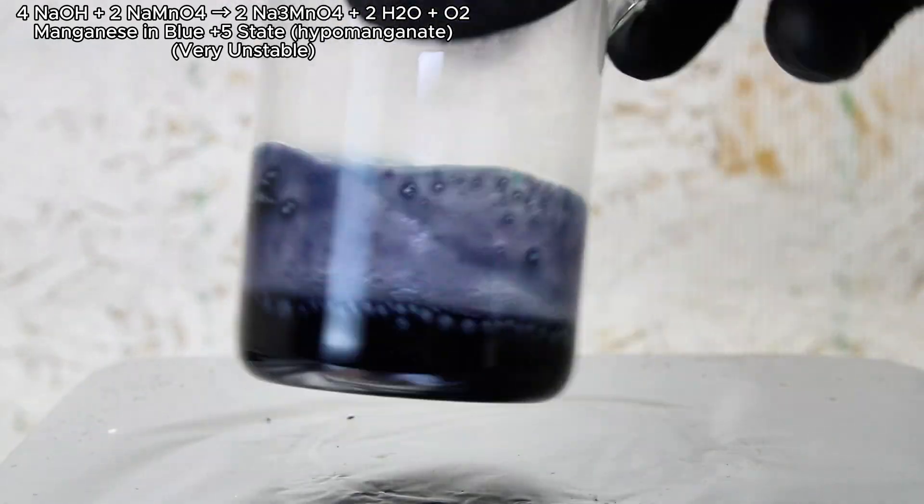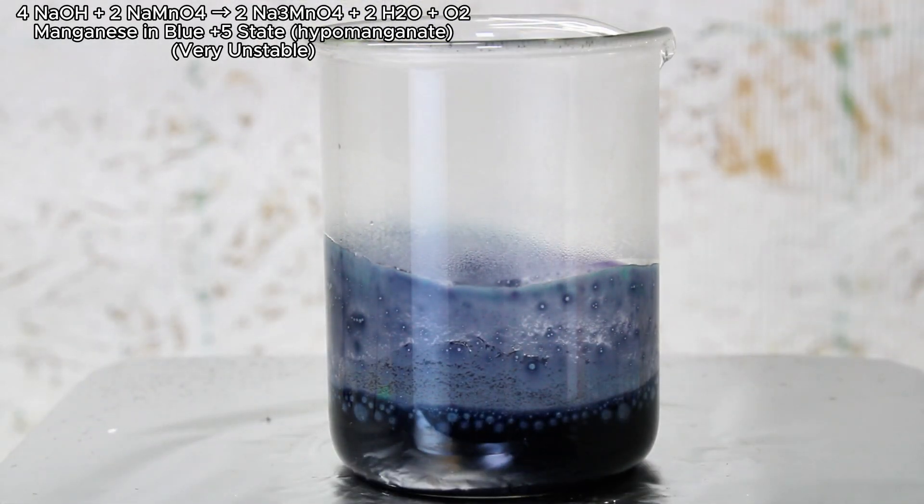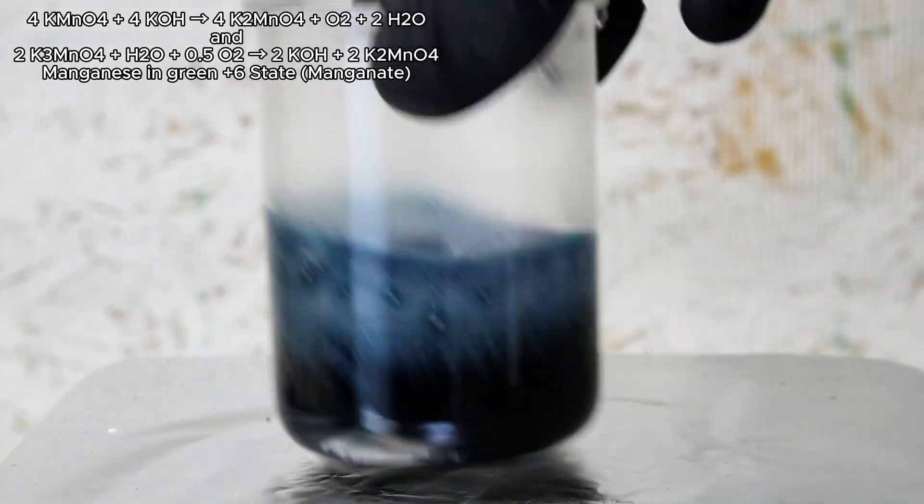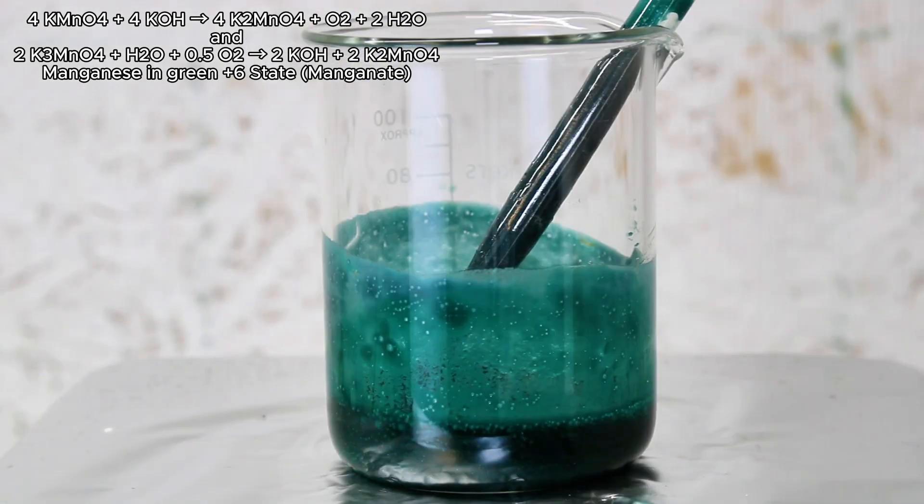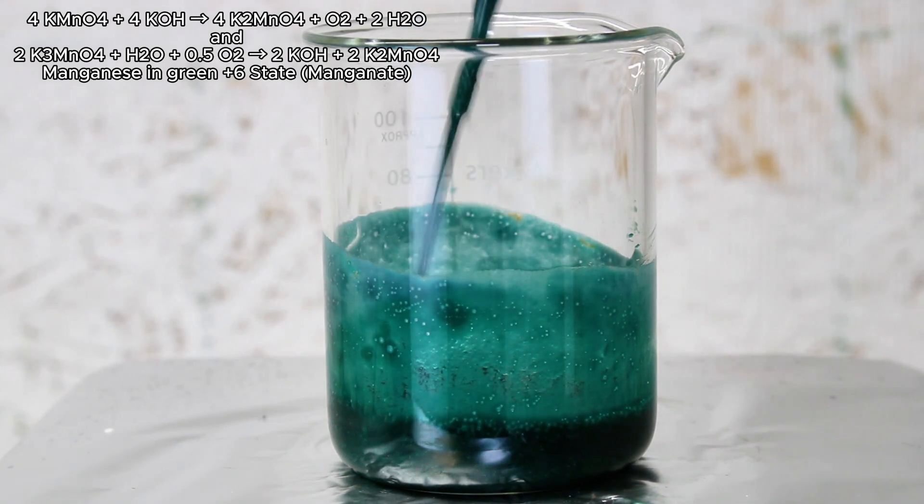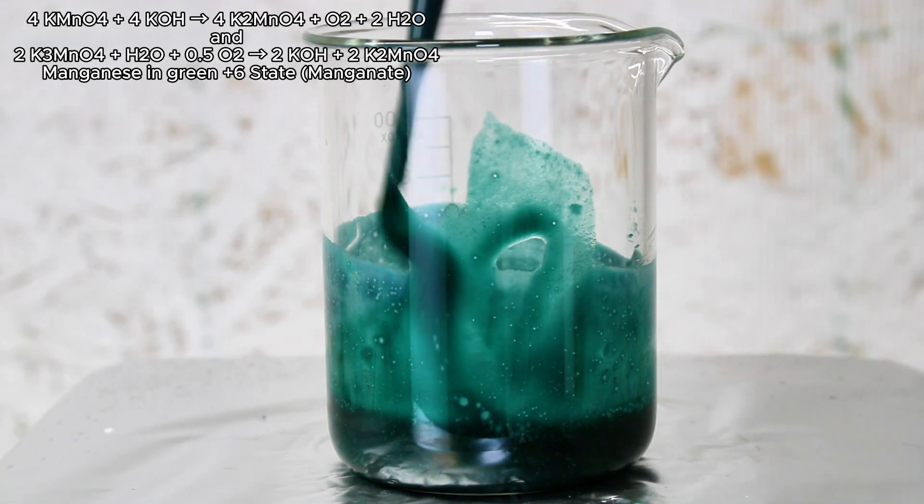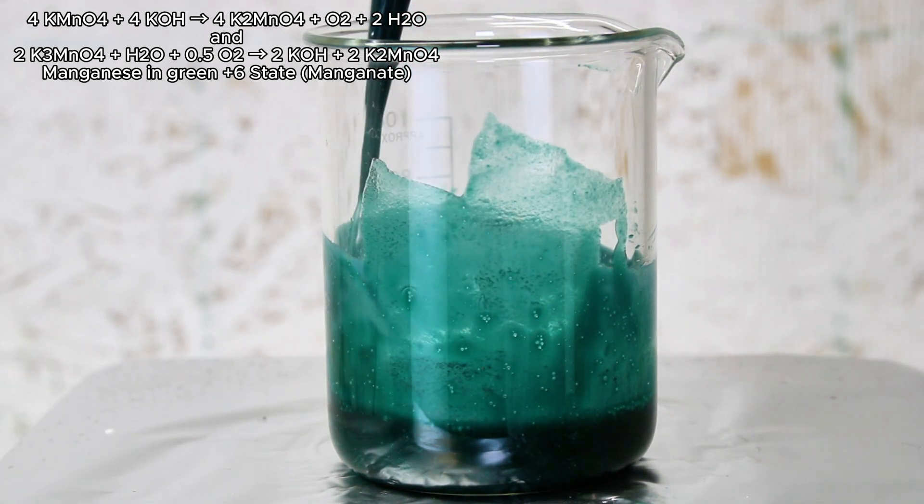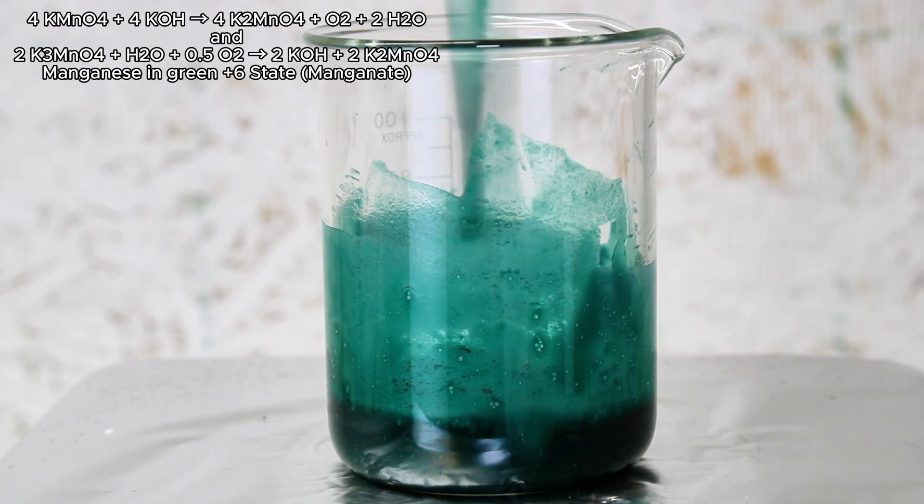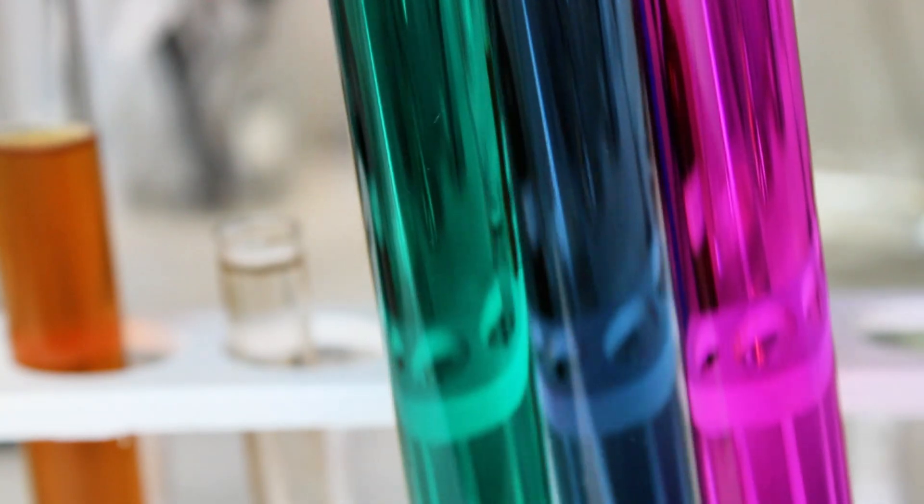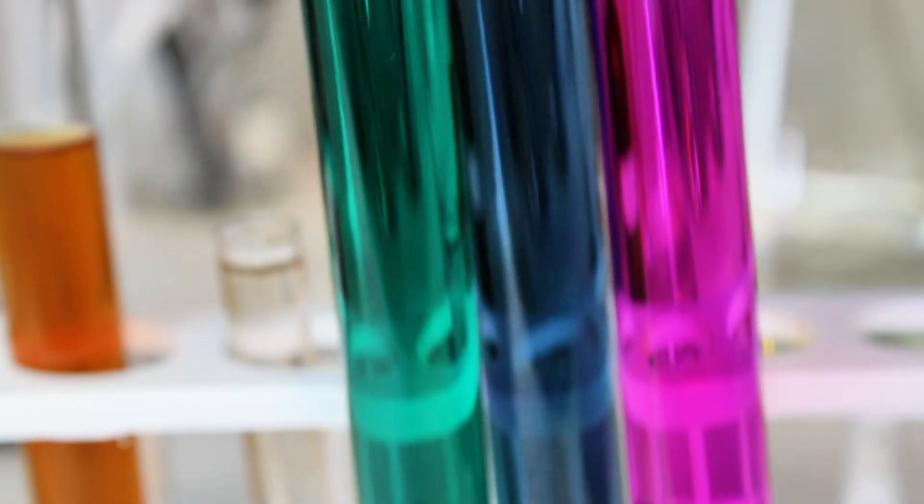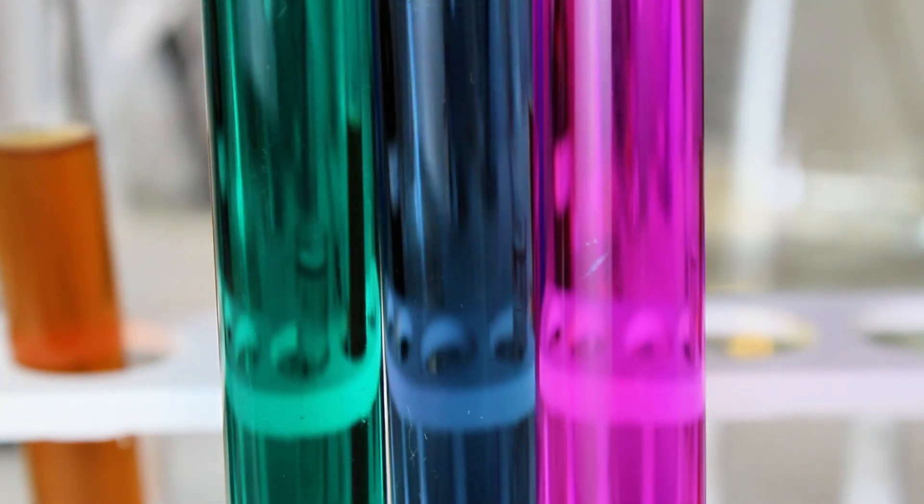Hypomanganate is a strong blue color, but it's highly unstable and will eventually oxidize to manganate, which is a green compound that represents manganese in its plus six state. This oxidation happens very quickly in strongly alkaline conditions, but if you dilute it somewhat, it can last a few hours. Here I have hypomanganate, manganate, and permanganate next to each other, so you can more easily see the color difference between the three.